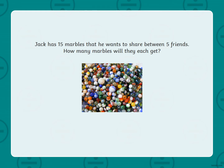Here we have our first worded problem. It's really important that we read it clearly and understand it. So Jack has 15 marbles that he wants to share between five friends. How many marbles will they each get? Now it's really important that I look within that worded problem for some important information. Straight away I can visually see two numbers and I know that they're important. And I also can see 'share between', which is my big hint that I need to be using division.